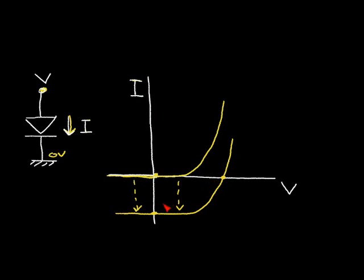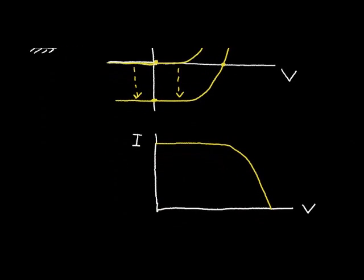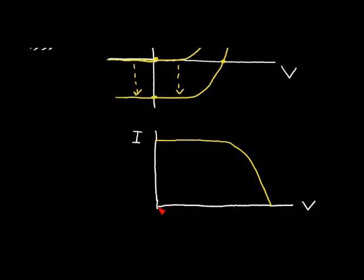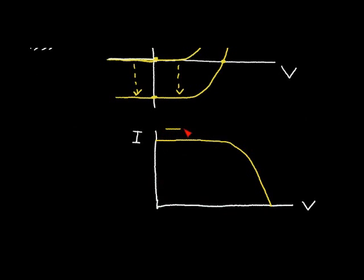In solar cell notation it's common to take this quadrant and redraw it. We invert the current axis so that we plot positive current versus positive voltage, giving the standard I-V curve for a solar cell. If we decrease the light intensity, this curve moves down; if we increase the light intensity, the curve moves up, producing more voltage and more current.